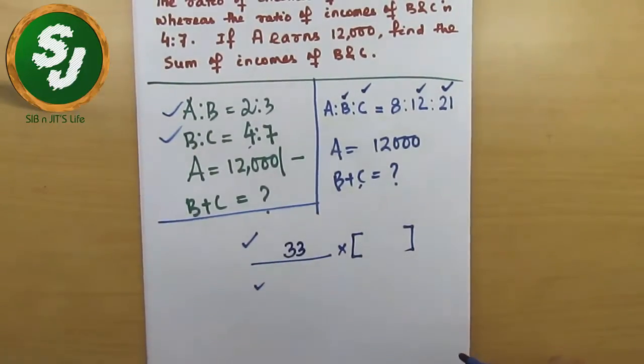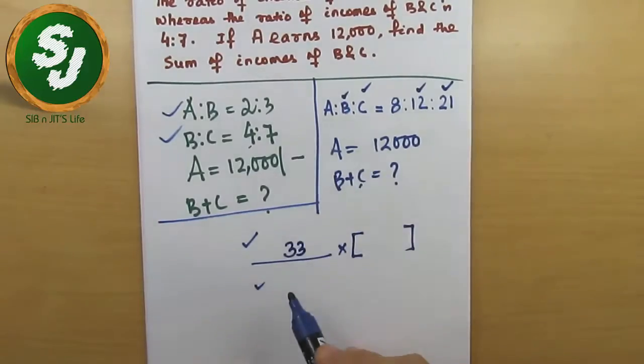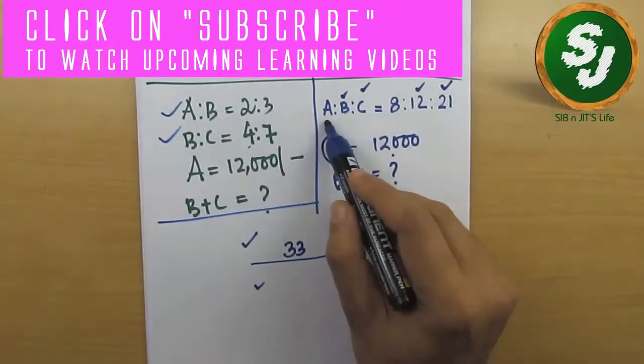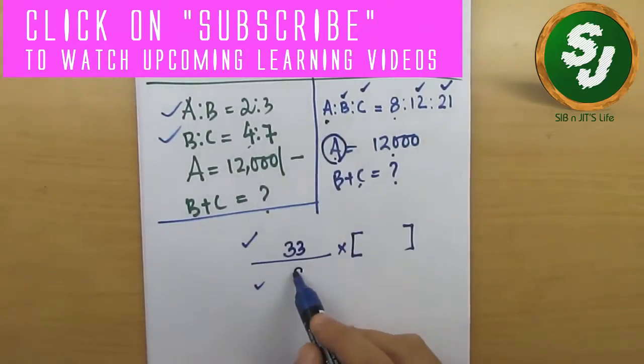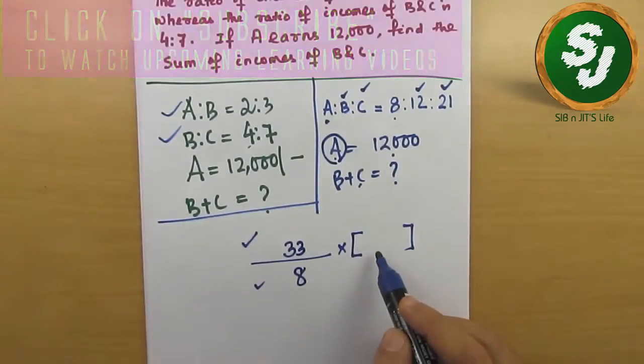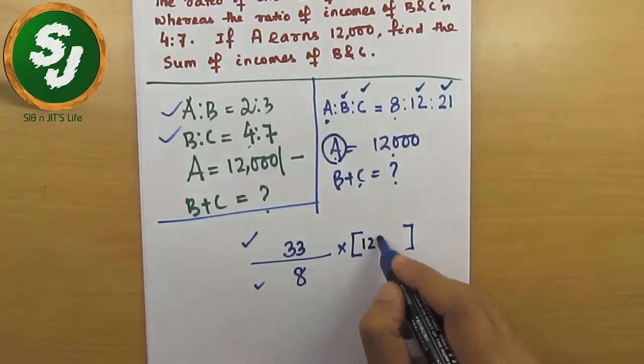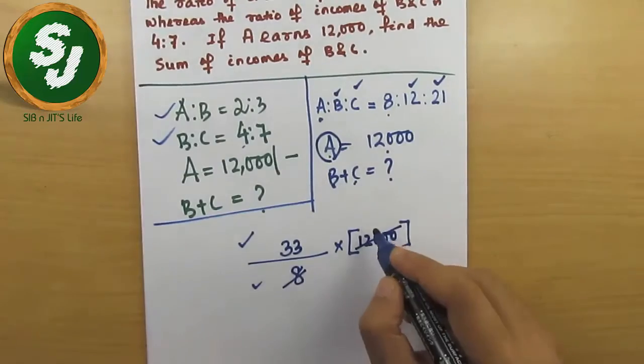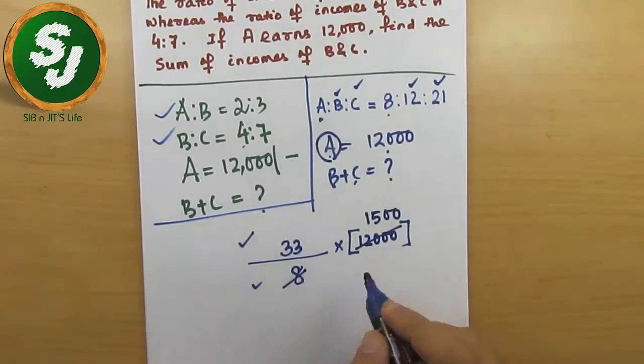And what is to be written? The ratio part of given information, A is given, that's why the ratio part of A is 8 here. And what is to be written here? The number 12,000. So this is how the numbers have to be placed. If you calculate this one, it becomes 1500, and 33 into 1500 would be the value of this question.